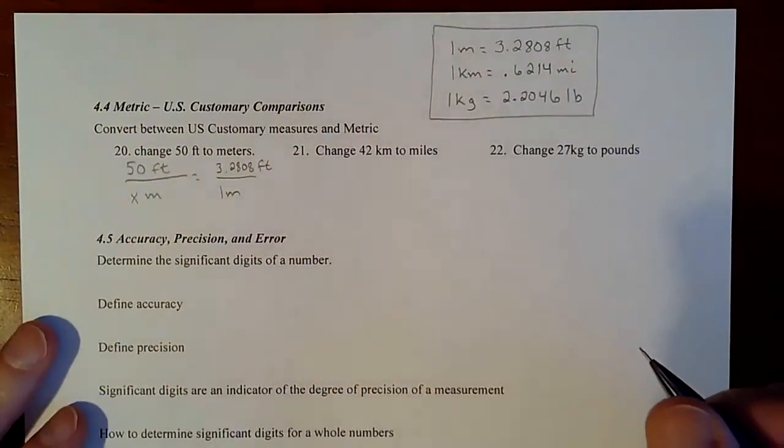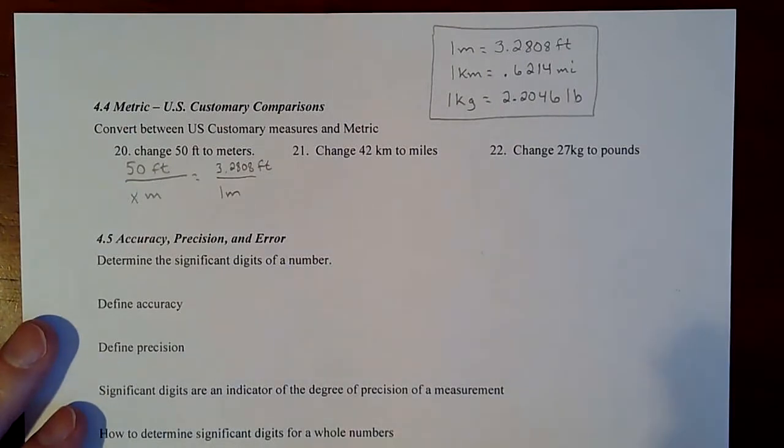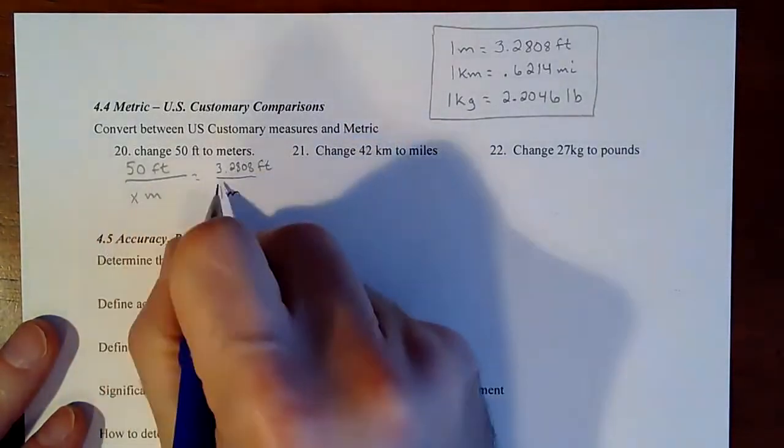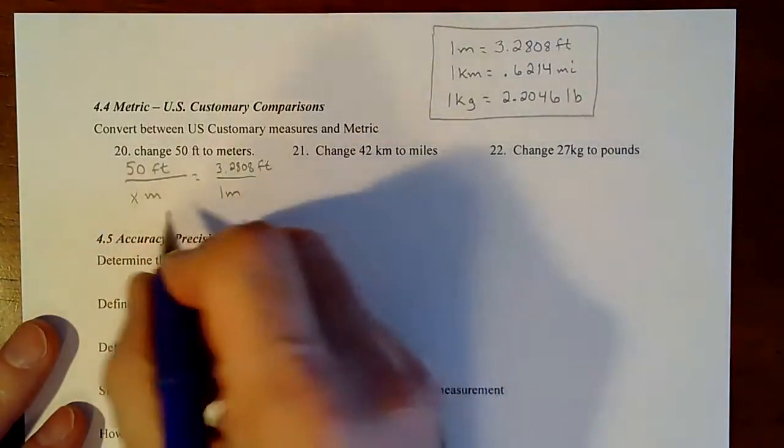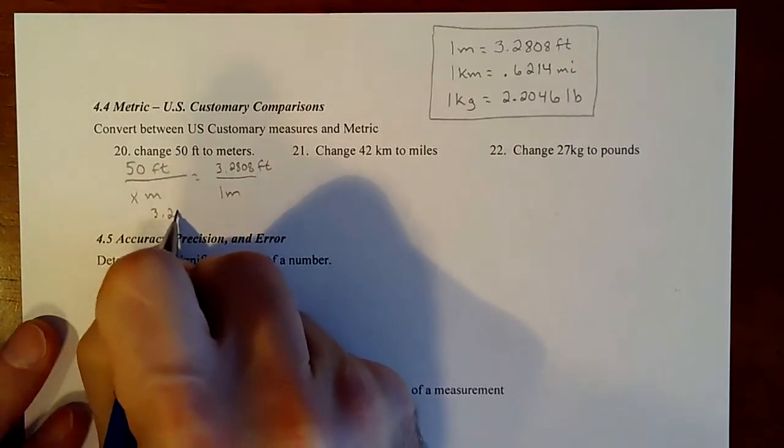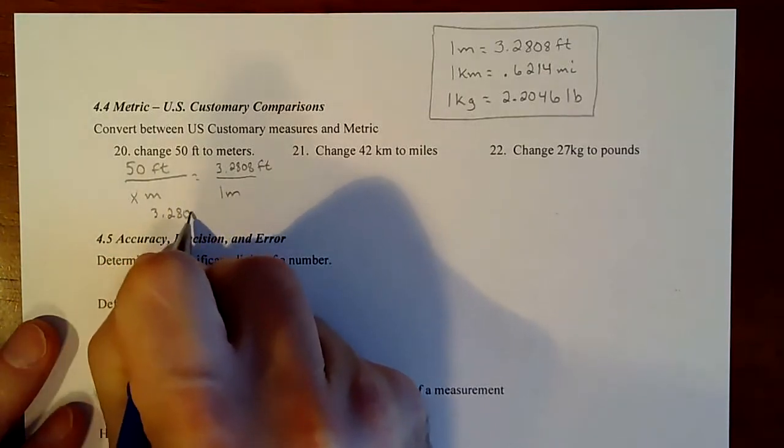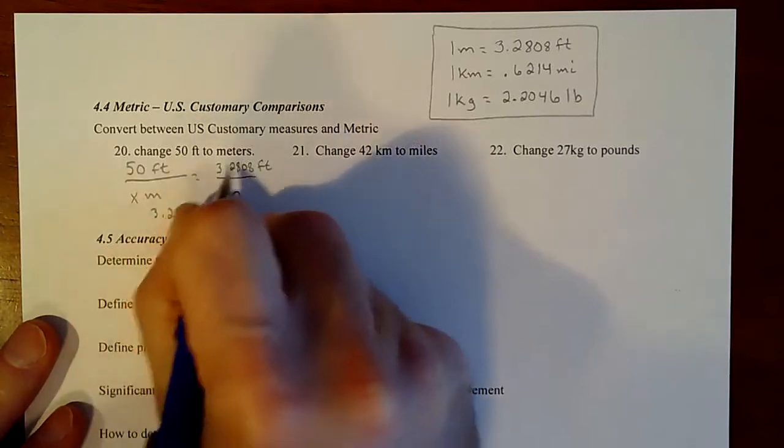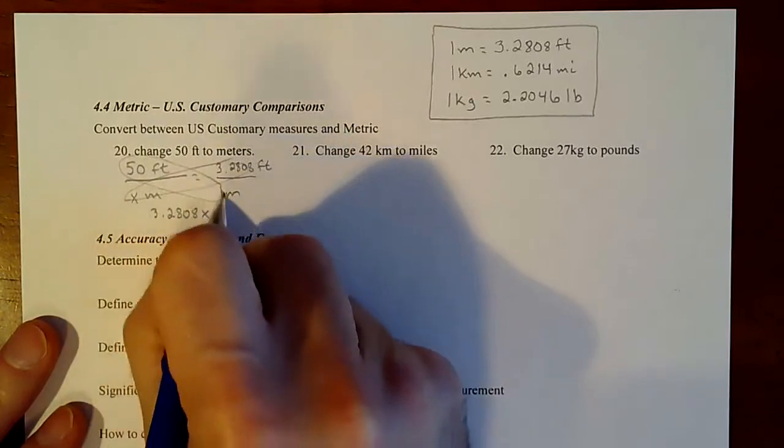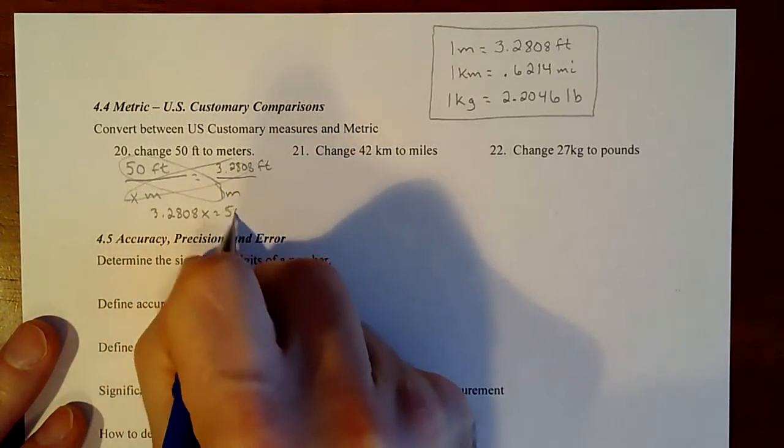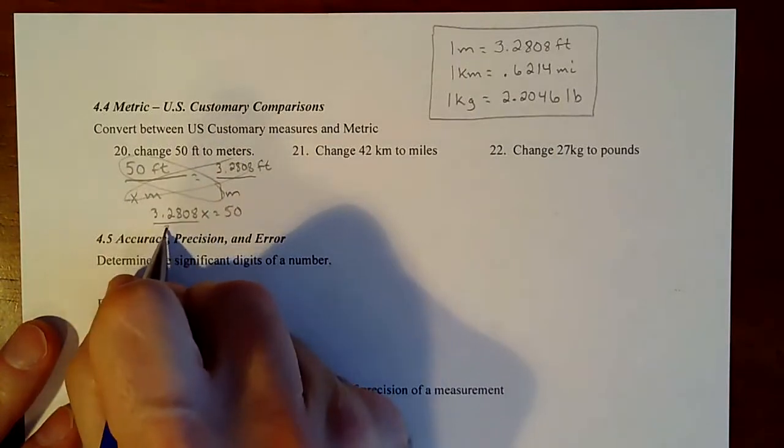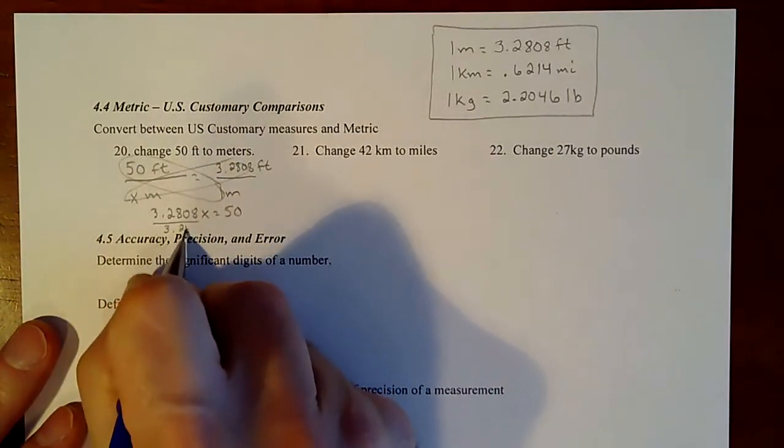Alright, so then to solve that, I am going to cross multiply. I'm going to do the work underneath. So I'm going to have 3.2808 times x. That's this cross product. Equals 1 times 50, which is 50. And then I would divide by 3.2808.